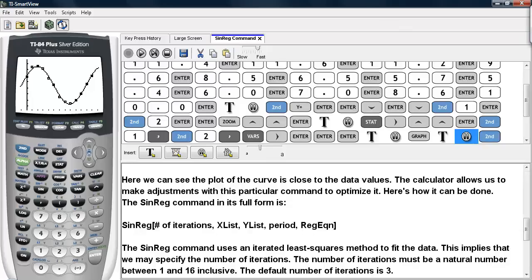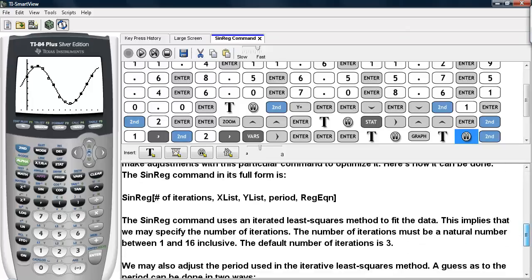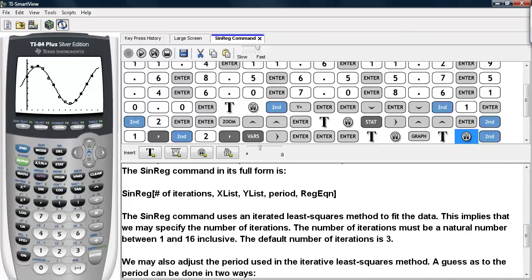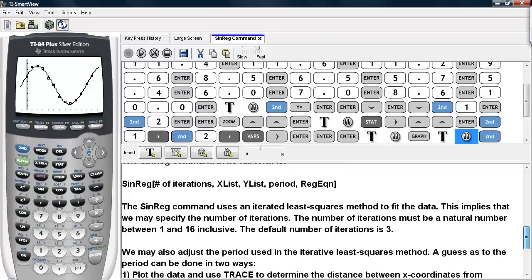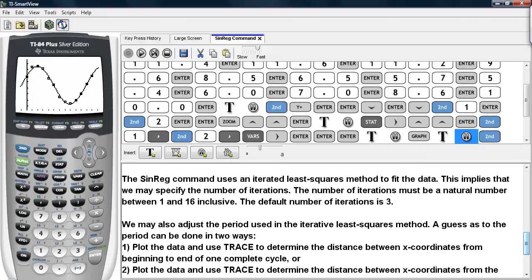And here's how this can be done. The full sinreg command is the number of iterations that's listed first, the x list, the y list, the period, and then where you want to store the results. So we're going to use this full command version and see what differences result.